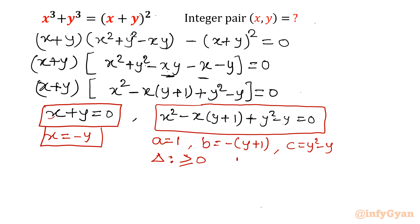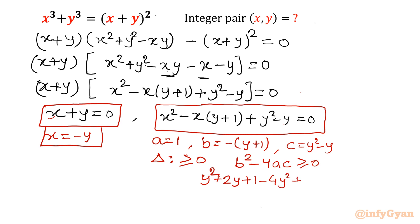The discriminant is b² minus 4ac, and it must be greater than or equal to 0. So b² minus 4ac equals (y plus 1)² minus 4·1·(y² minus y), which gives y² plus 2y plus 1 minus 4y² plus 4y, leading to minus 3y² plus 6y plus 1 greater than or equal to 0.